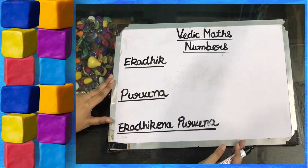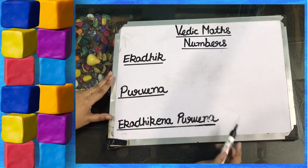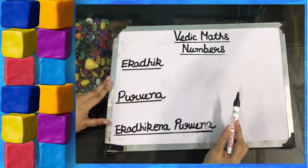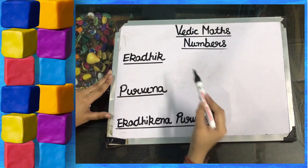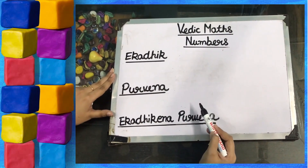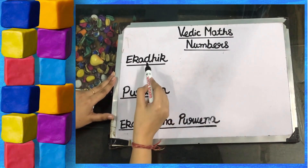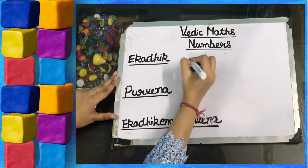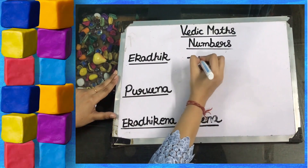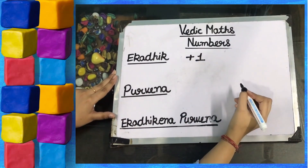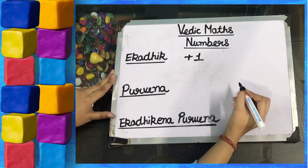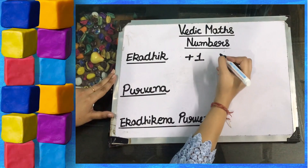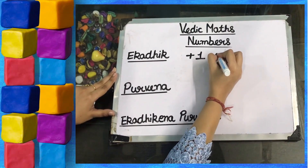Today we will study about numbers. In this chapter, firstly we will learn about the following terms. The first term is Ekadik. Ekadik means plus 1. In Vedic Maths, we show Ekadik with the help of a dot.